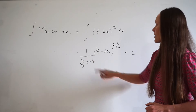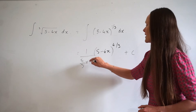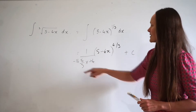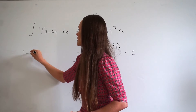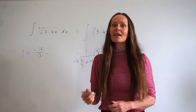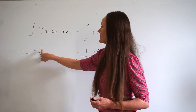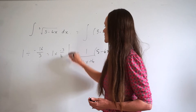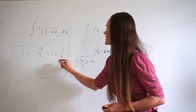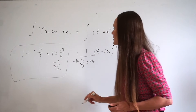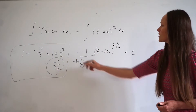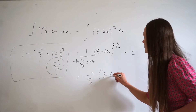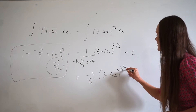Now simplify: 4 multiplied by negative 4 is negative 16. Dividing 1 by negative 16 over 3 is the same as multiplying by negative 3 over 16, which simplifies to negative 3 over 16. So the final answer is negative 3 over 16 times (5 minus 4x) raised to the power of 4 thirds, plus c.